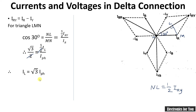You can also use a second method to calculate this — it is already explained in my previous video, the link is in the description. Now let's calculate the power in delta connection. Note that the power formulas for delta and star connections are the same, since overall power depends on current and voltage.